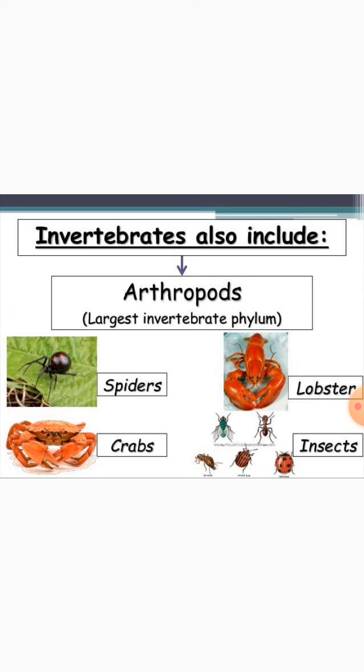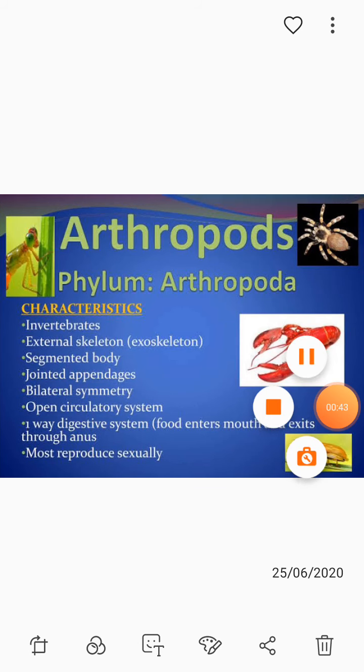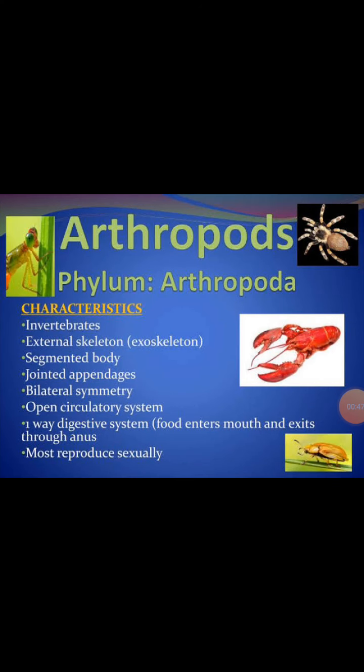What are the general characters of Arthropoda? Arthropoda have jointed legs and a segmented body. Arthropoda is the largest phylum in the animal kingdom, and the body is divided in bilateral symmetry.